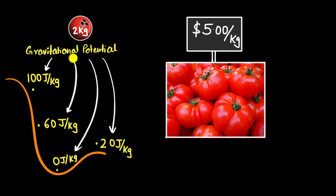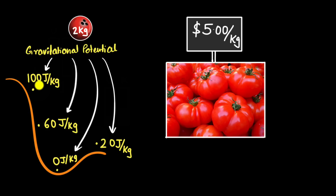Gravitational potential and gravitational potential energy — there is a subtle difference. Gravitational potential is a number assigned at different points in space, and it tells us what the gravitational potential energy would be if you kept one kilogram of mass there. For example, the gravitational potential energy here would be 20 joules for one kilogram, but 60 joules for three kilograms, and so on.